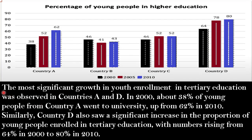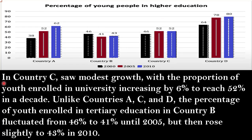Body paragraph 1: The most significant growth in youth enrolled in tertiary education was observed in Country A and D. In 2000, about 38 percent of young people from Country A went to university, rising to 62 percent in 2010. Similarly, Country D also saw a significant increase, with numbers rising from 64 percent in 2000 to 80 percent in 2010.